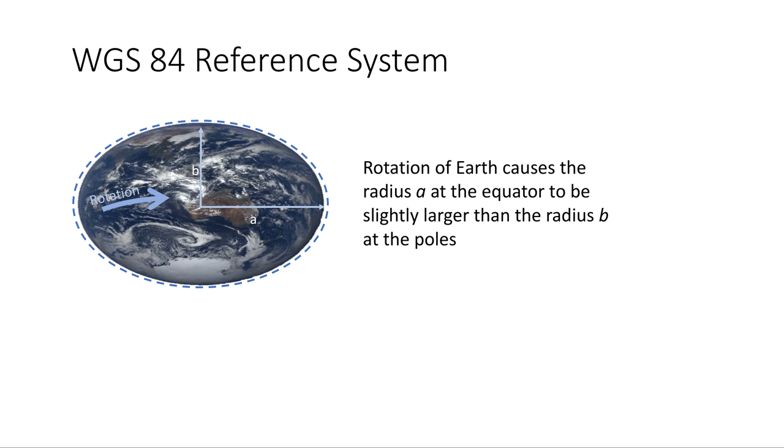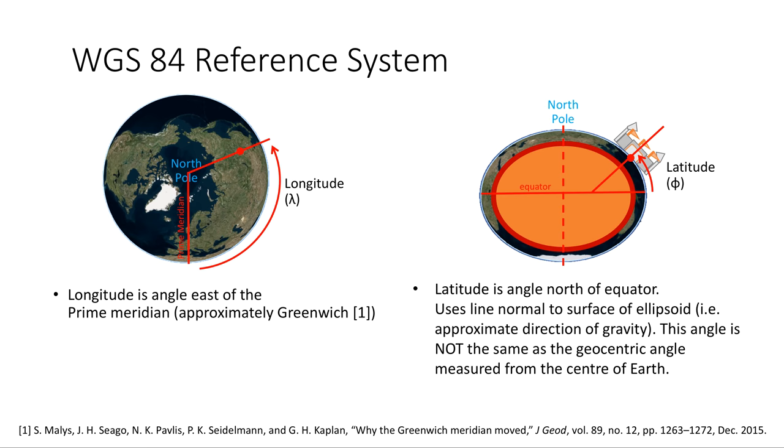Here's an exaggerated diagram to show you what I mean. Basically the rotation of Earth causes that radius a to be 0.3% greater than the radius at b. Or more accurately, since we're now dealing with an ellipse cross section, we'd call a the semi-major axis and b the semi-minor axis. Longitude is angle east of the prime meridian and latitude is angle north of the equator.